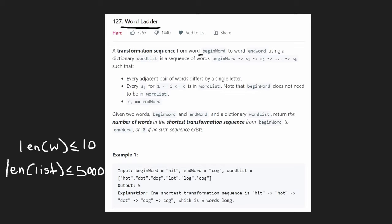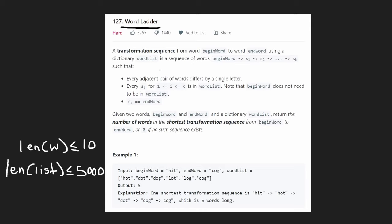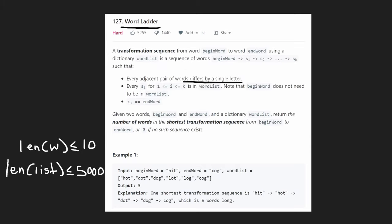The idea is we're given a beginning word and we're given an end word and we're given a list of words. We want to create a sequence from this beginning word to the end word. The end word is definitely going to need to be a part of our word list, but the beginning word actually might not be a part of the word list. Every adjacent pair of words in that sequence can only differ by exactly one character. We want to find the shortest sequence, and the length will be the number of words.